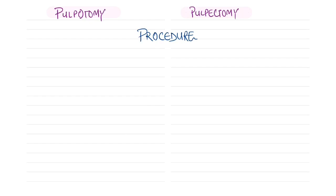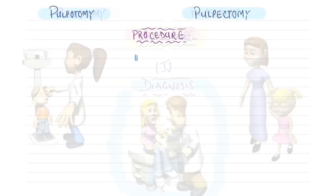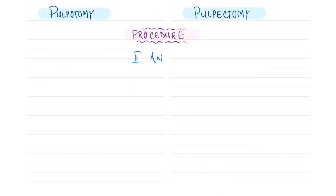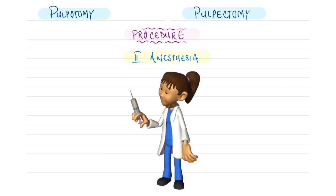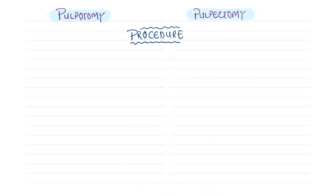The procedure steps common to both pulpotomy and pulpectomy begin with: first, diagnosis based on history-taking, clinical findings, and radiographic findings; second, anesthetizing the tooth with local anesthetic solution or under general anesthesia; third, proper isolation — rubber dam isolation is the preferred method.